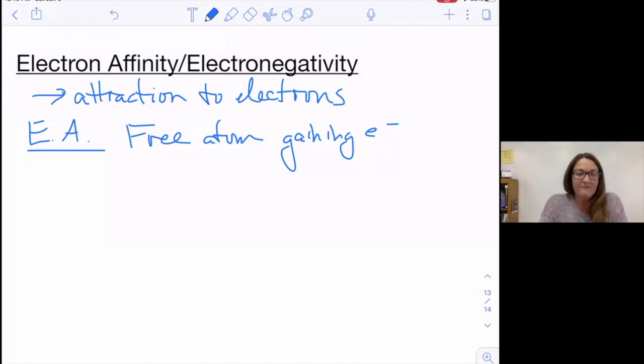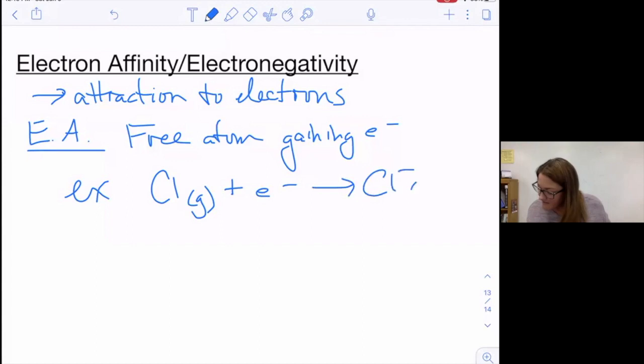In electron affinity, it's a free atom gaining electrons. For example, chlorine in a gaseous form picking up an electron and becoming a negative ion. What type of atoms tend to form negative ions? The ones on the right-hand side of the periodic table, the nonmetals.